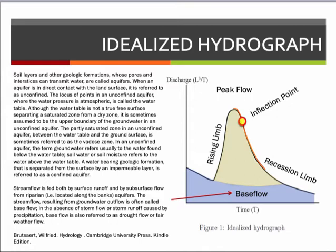Stream flow is fed both by surface runoff and by subsurface flow from riparian aquifers. The stream flow resulting from groundwater flow is often called base flow. In the absence of storm runoff caused by precipitation, base flow is also referred to as drought flow or fair weather flow. In the diagram, base flow is identified as the blue-shaded portion of the hydrograph and storm flow is the olive-colored portion.